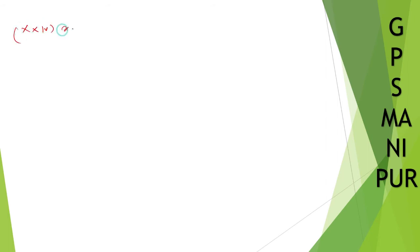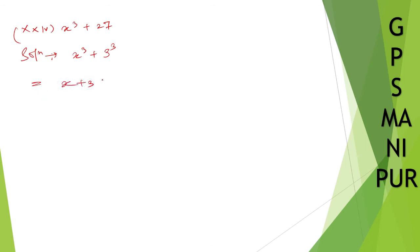Next question is Roman number 24: x cube plus 27. Solution. x cube plus 27 — I can write 27 as 3 cube. For those who don't know, the formula for a cube plus b cube is (a + b)(a squared minus ab plus b squared). Let me write that down: (a + b)(a² − ab + b²).